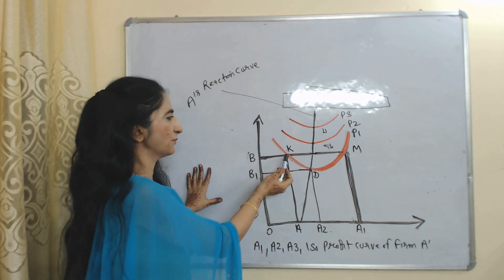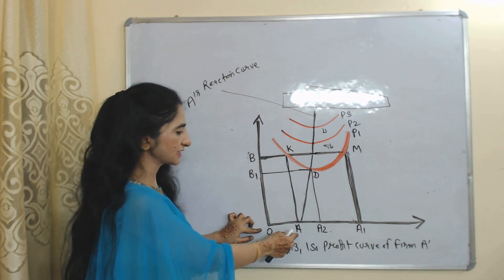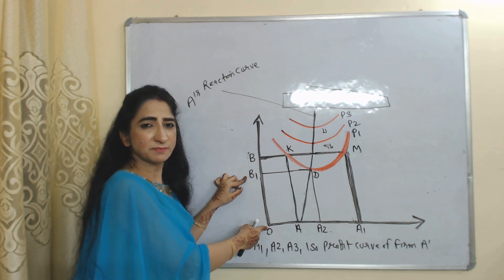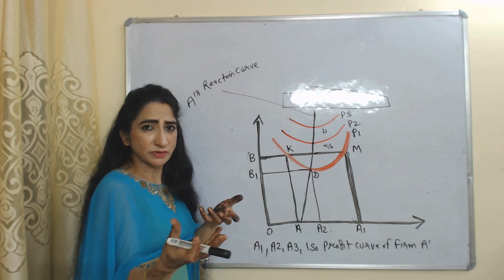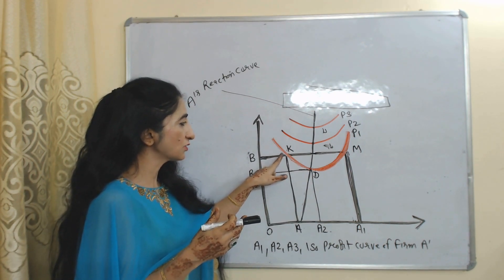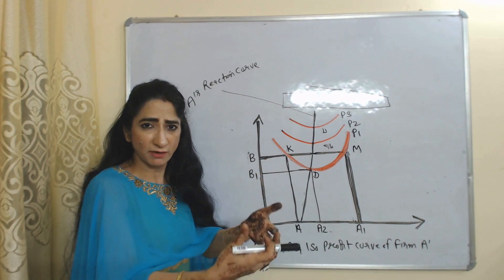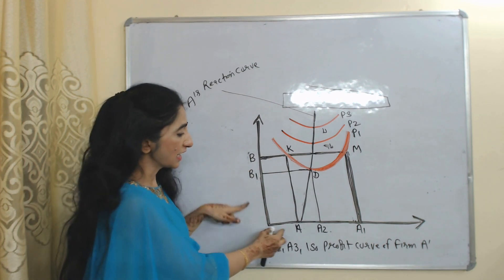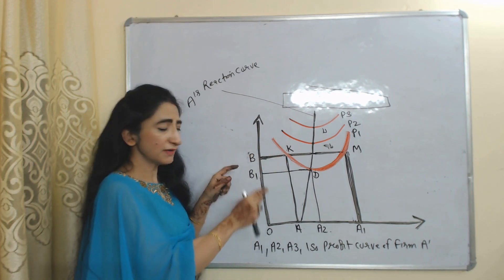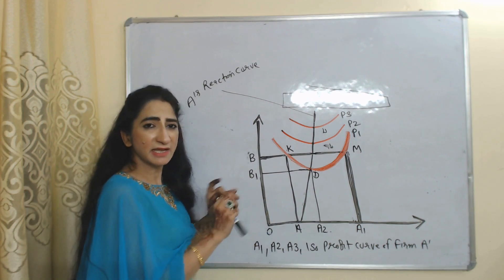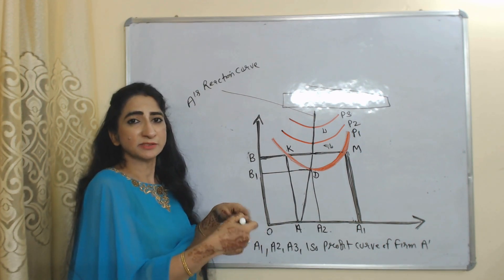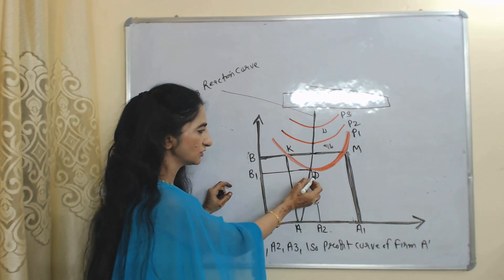Now suppose our equilibrium point is K. Here B is taking price OB and A is taking price OA. We assume B reduces its price from OB to OB1. As B reduces price, profit of A will also reduce. But A cannot reduce its price because at point K, the price of A is already very low compared to firm B. That's why if B reduces from OB to OB1, A will not reduce its price. Instead, in order to maintain the same amount of profit, A will increase its price from OA to OA2 and the new equilibrium point is D.